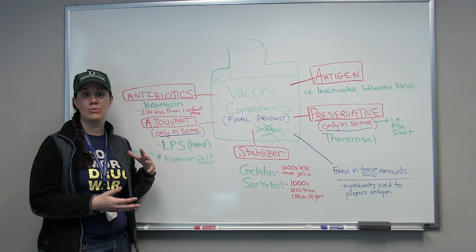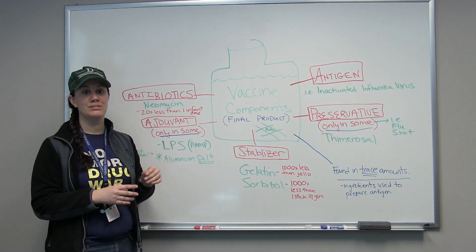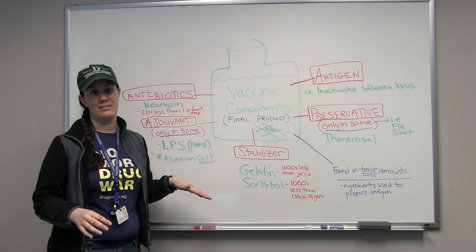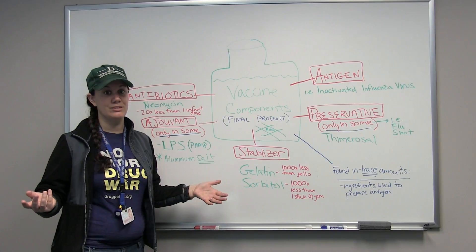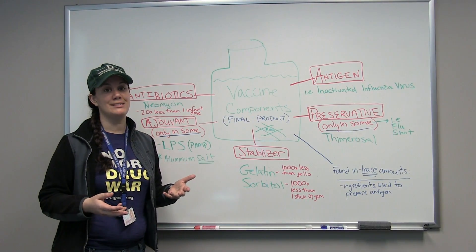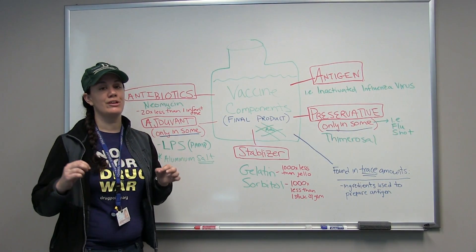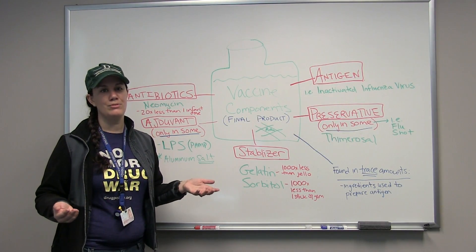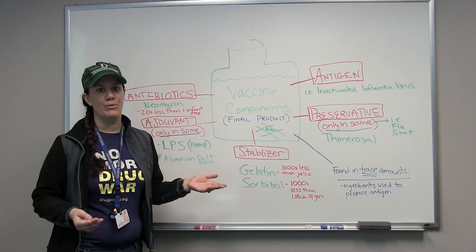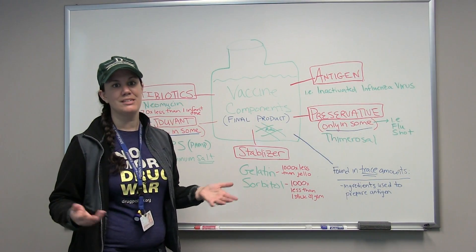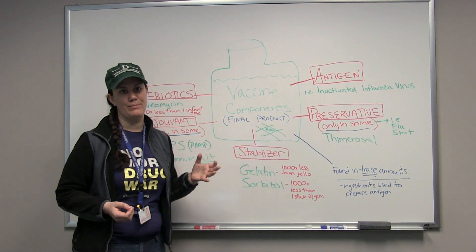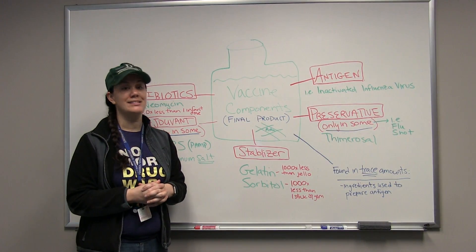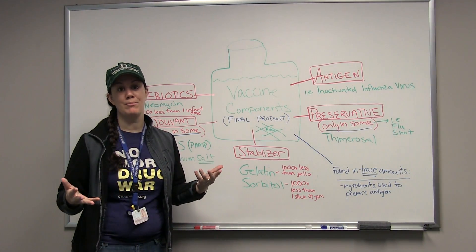So to repeat, these are the general categories of vaccine ingredients with some specific examples. These are not found in all vaccines — the general categories are typically found in many vaccines, but we have to look at each individual vaccine to see what's in there. That's why it's so confusing, because each one is just slightly different. Next we're going to talk about examples of vaccines and how we make vaccines.